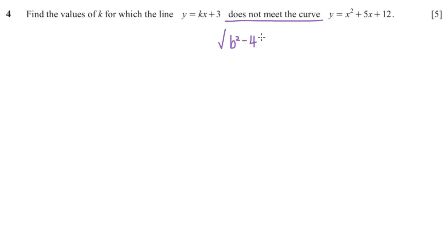Because it says it does not meet the curve, we know that the square root of b squared minus 4ac is less than 0.